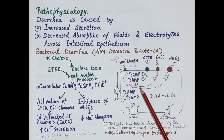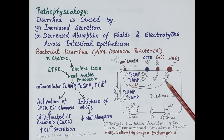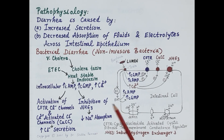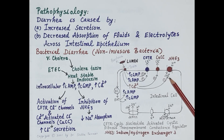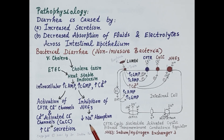Apart from this, increased levels of cyclic AMP, cyclic GMP, and calcium also inhibit sodium-hydrogen exchanger 3 (NHE3), which inhibits reabsorption of sodium and water. Additionally, toxins increase release of 5-hydroxytryptamine from enterochromaffin cells, which further inhibits reabsorption of sodium in intestinal cells and increases secretion of chloride in the intestinal lumen. Thus there is increased chloride secretion and inhibition of sodium and fluid absorption, causing diarrhea.